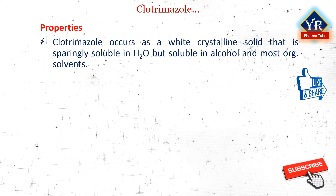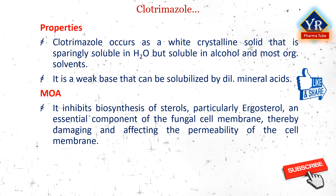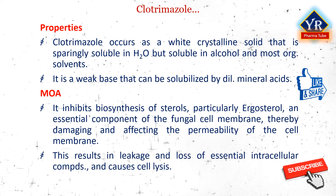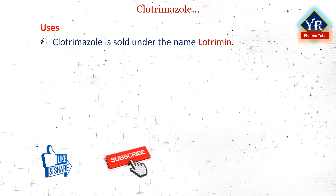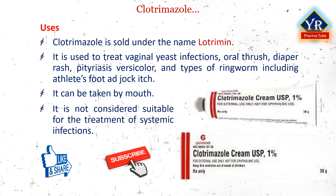Clotrimazole occurs as a white crystalline solid that is sparingly soluble in water but soluble in alcohol and most organic solvents. It is a weak base that can be solubilized by dilute mineral acids. It is extremely stable with a shelf life of more than 5 years. Clotrimazole inhibits biosynthesis of sterols, particularly ergosterol, an essential component of the fungal cell membrane, thereby damaging and affecting the permeability of the cell membrane. This results in leakage and loss of essential intracellular compounds and eventually causes cell lysis. Clotrimazole is sold under the brand name Lotrimin. It is used to treat vaginal yeast infections, oral thrush, diaper rash, pityriasis versicolor, and types of ringworm including athlete's foot and jock itch. It can be taken by mouth or applied as a cream to the skin or in the vagina, but is not considered suitable for the treatment of systemic infections.